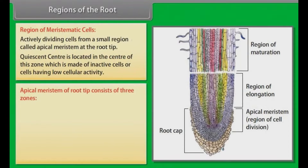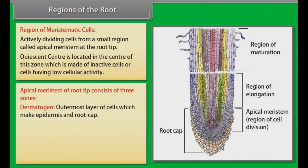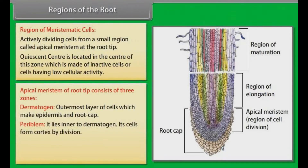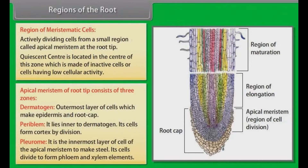The apical meristem of root tip consists of three zones: Dermatogen — the outermost layer of cells which make epidermis and root cap; Periblem — it lies inner to dermatogen, and its cells form cortex by division; Plerome — the innermost layer of cells of the apical meristem that forms stele. Its cells divide to form phloem and xylem elements.